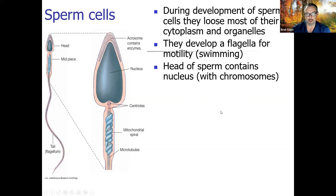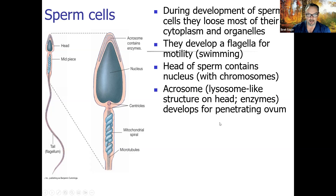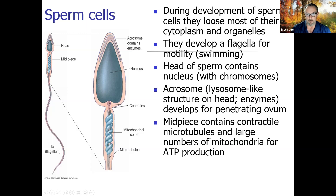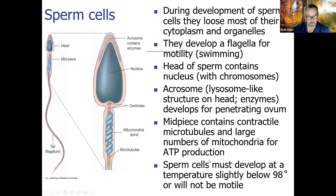The head of the sperm contains the nucleus with chromosomes tightly packed inside. The acrosome on the surface has enzymes that dissolve the outermost layers of the ovum — the zona pellucida and corona radiata — before the sperm head can be drawn in. The mid-piece contains contractile microtubules and large numbers of mitochondria for ATP production. Sperm cells must develop at a temperature slightly below 98 degrees Fahrenheit or they will not be able to swim — that's why the testicles are external, and on cold days they move closer to the body while on warm days they move further away.